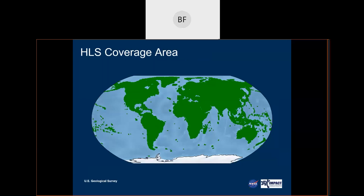I want to clarify what we mean by global coverage. Global coverage for HLS processing means all global land outside of Antarctica. Anywhere shaded in green on the map is an HLS tile, so you should see imagery for that specific location. Danielle will walk through NASA Worldview, which includes this grid so you can zoom in to a specific location and get the tile ID for your area of interest.